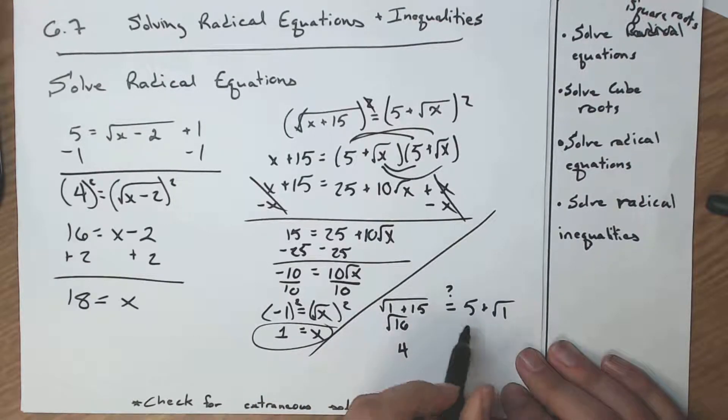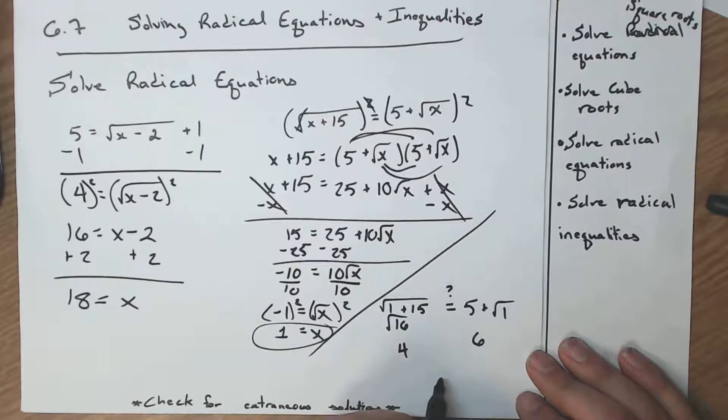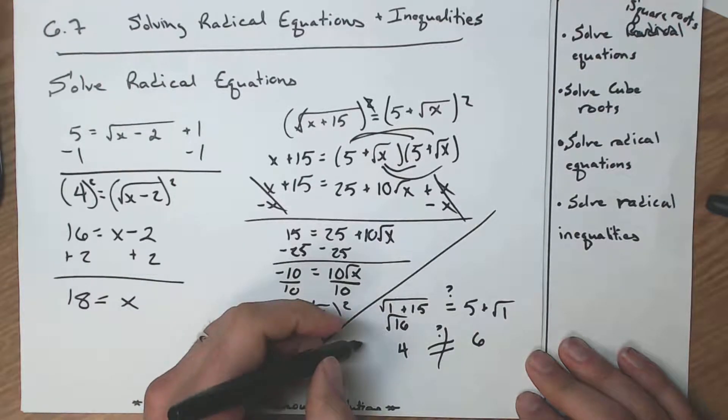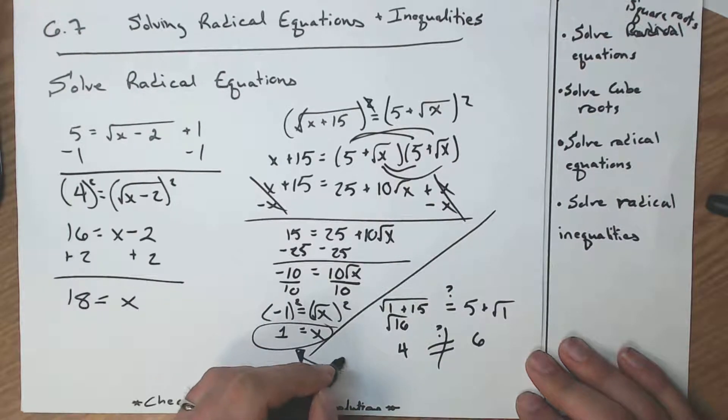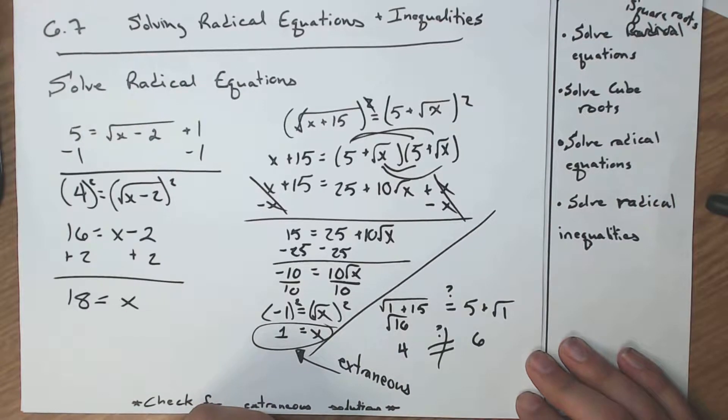On this side, 5 plus, what's the square root of 1? Well, that's a 1. So that's 6 on that side. Are those two equal? They are, in fact, not. So this is an extraneous solution.